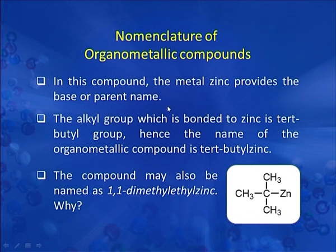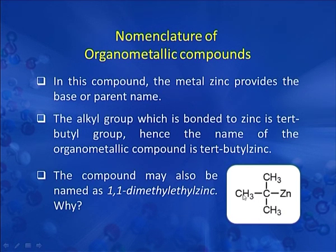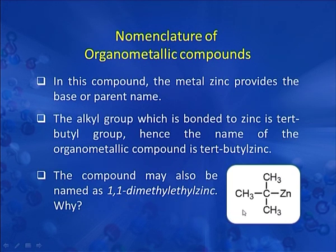Another example where the metal zinc provides the parent name: the tertiary butyl group bonded to zinc gives the molecule the name tertiary butyl zinc. The name can also be 1,1-dimethylethyl zinc, because the ethyl carbon chain has its first carbon substituted with two methyl groups, making the IUPAC name of the alkyl side chain 1,1-dimethylethyl.